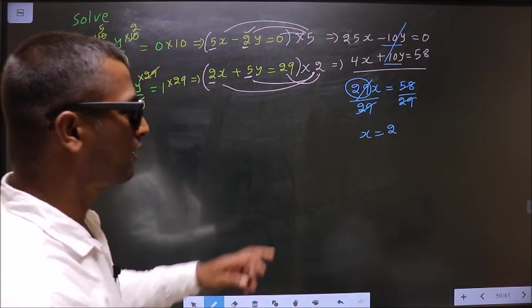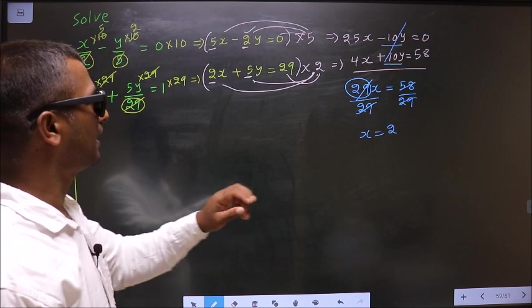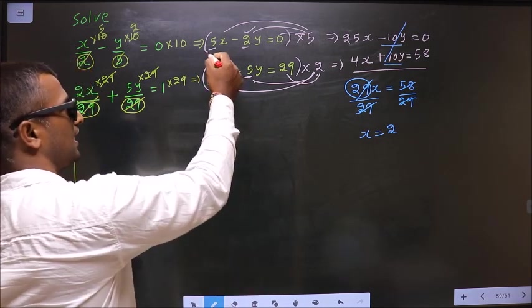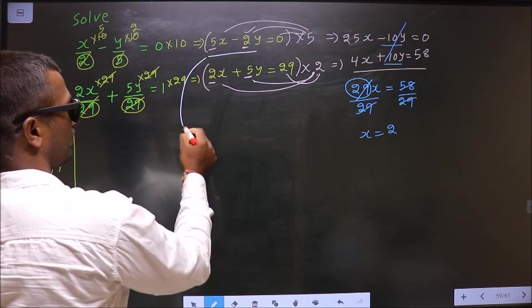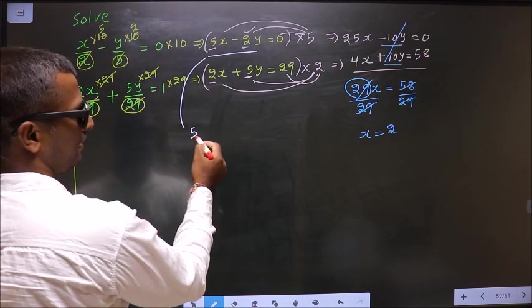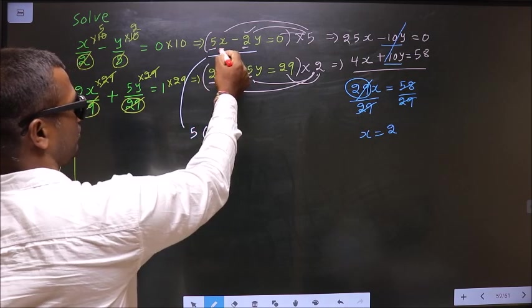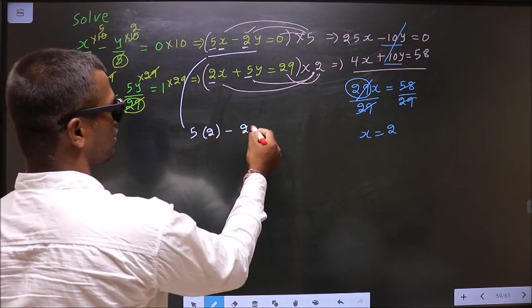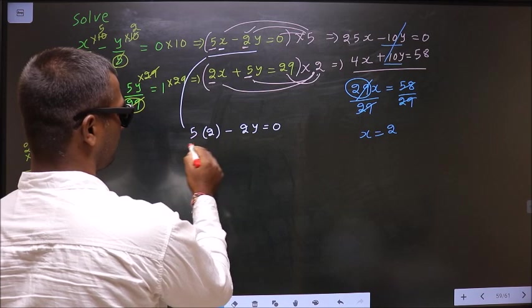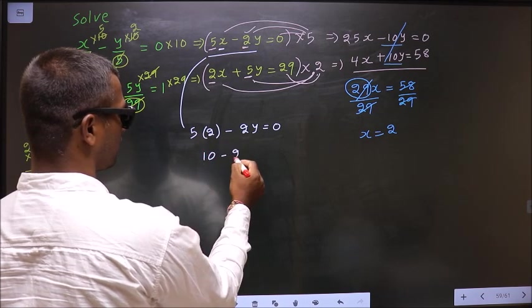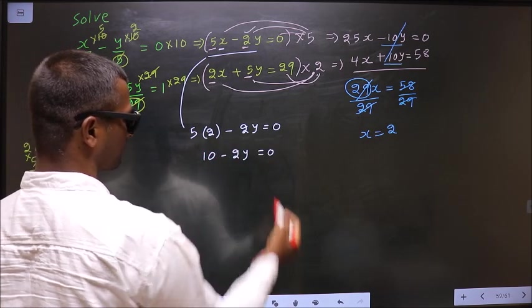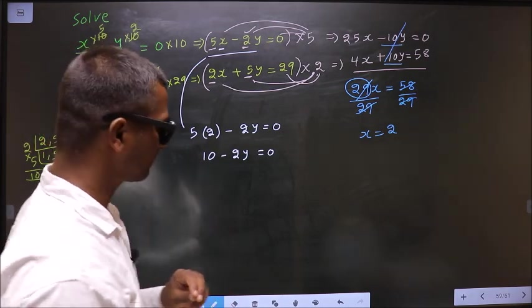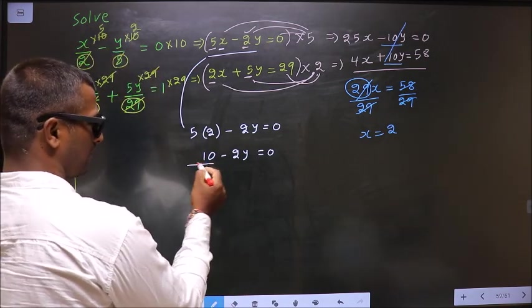Now to get y, replace x in any one of the equations. Let us say I replace in this. So I get 5 in place of x, 2. Minus 2y equal to 0. 5 into 2 is 10 minus 2y equal to 0. So now to get y, I should make y the subject. For that first, I should remove plus 10.